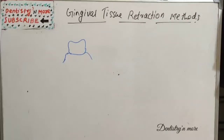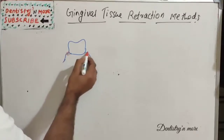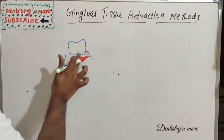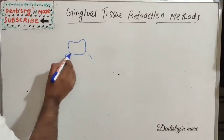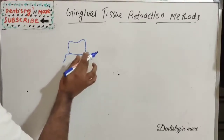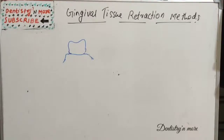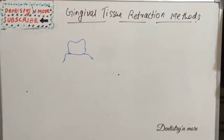So we have marginal gingiva here, and we are going to reflect this marginal gingiva to make it more visible and get finer details of the cervical portion of the tooth. That is gingival tissue retraction. Why is it so important in FPD? It gives proper access to the prepared tooth, and for the reproduction of the finish line.